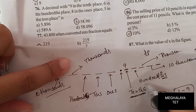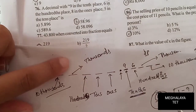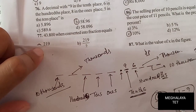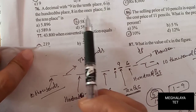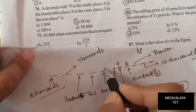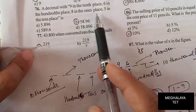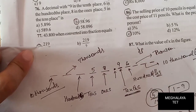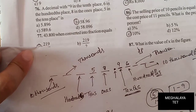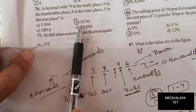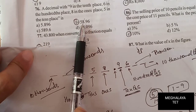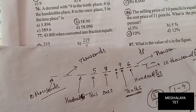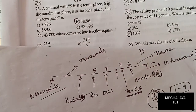6 goes in the hundredths place, 8 goes in the ones place, and 5 goes in the tens place. So the answer is 58.96. Looking at the options, we find option B is 58.96 — that is the correct answer. We'll discuss more questions using this concept.